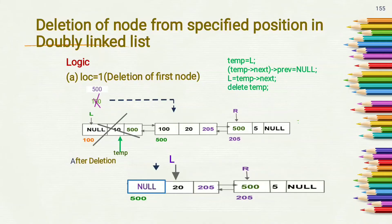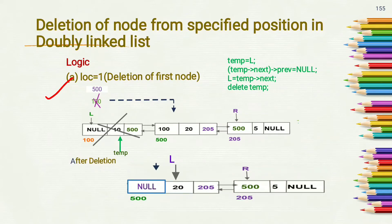When the doubly linked list is not empty and we have given a location variable containing value 1 — because in this algorithm we have given the location of the node which we want to delete — if the value of location is 1, that means we want to delete the first node from the doubly linked list.